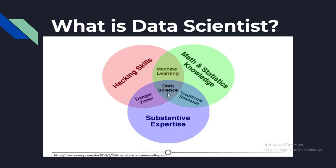We use data science to answer questions, so first we need enough expertise in the area we want to ask about in order to formulate questions and know what data sources are appropriate. Once we have our question and appropriate data, it often needs significant cleaning and formatting, which requires computer programming and hacking skills. Finally, once we have our data, we need to analyze it, which requires math and statistics knowledge.